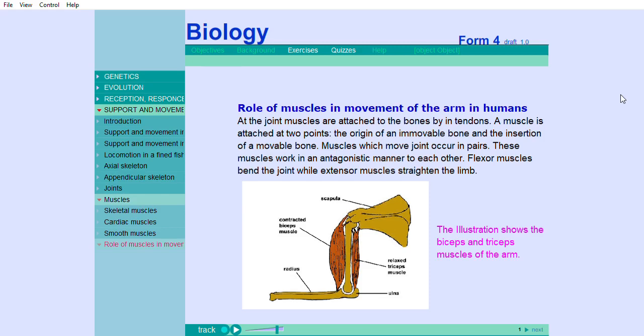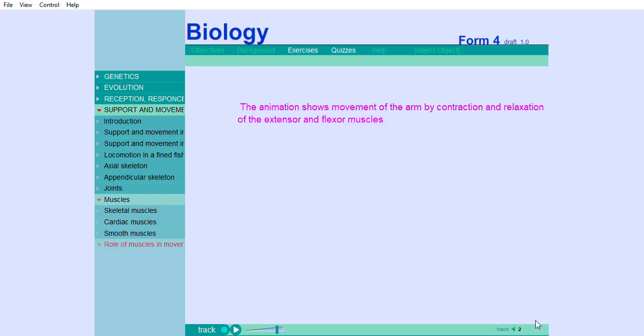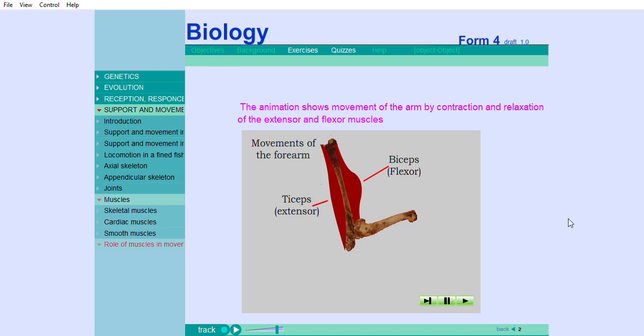Flexor muscles bend the joint, while extensor muscles straighten the limb. The illustration shows the biceps and triceps muscles of the arm. The animation shows movement of the arm by contraction and relaxation of the extensor and flexor muscles.